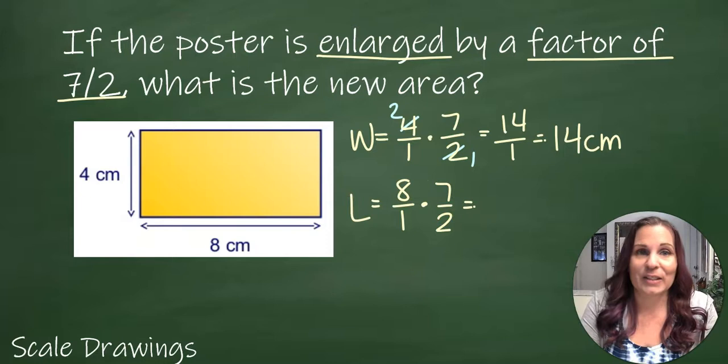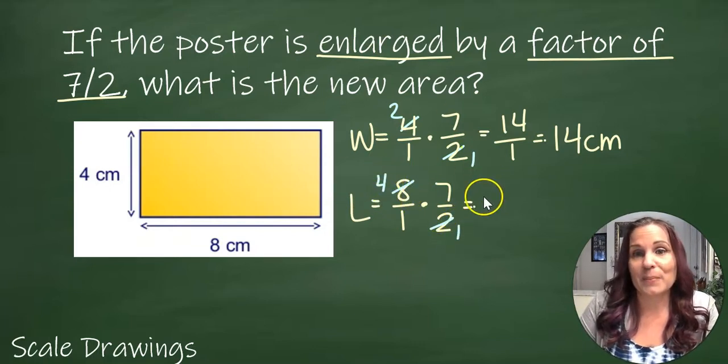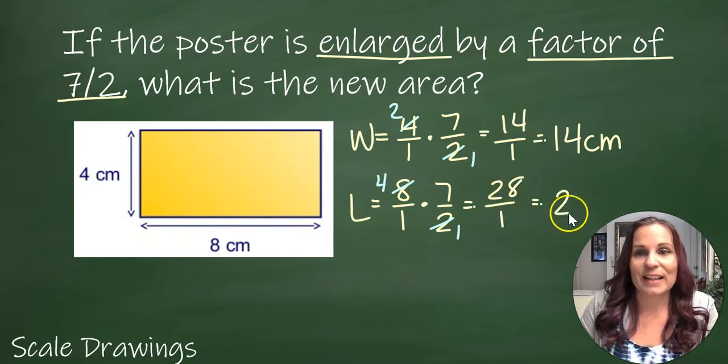Length, I'm going to do the same thing. My original length times my scale factor. I'm going to cross cancel because 8 and 2 are both divisible by 2. Multiply top times top and bottom times bottom, and that gives me 28 centimeters.